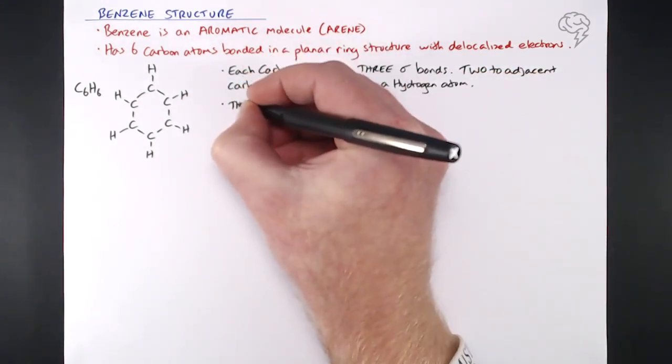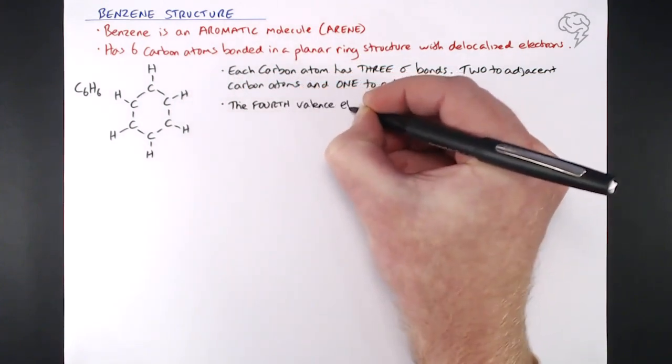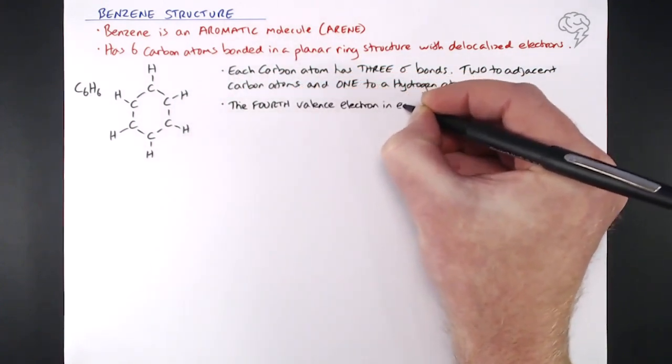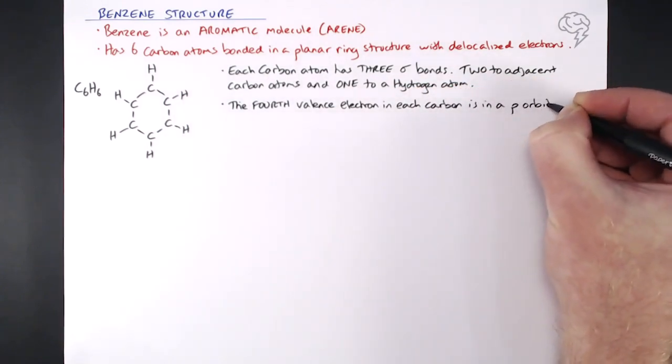Now of course carbon has got four valence electrons, so the fourth valence electron in each carbon atom is actually in a p orbital.